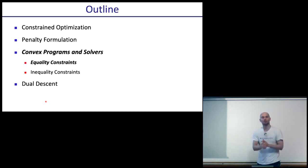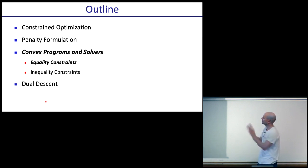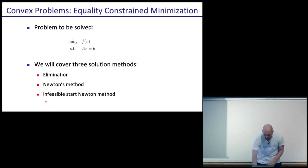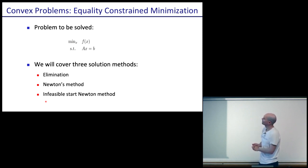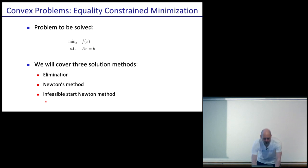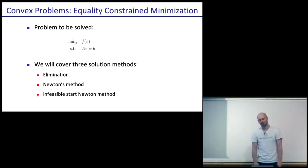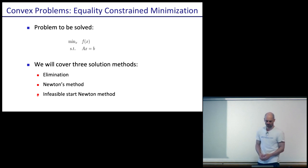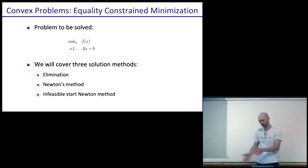Now we have to deal with equality constraints and inequality constraints. Let's first deal with equality constraints and ignore inequality constraints, then look at inequality constraints separately. The problem is: minimize over x, f of x, such that Ax = b. We'll see three different solution methods: elimination, Newton's method, and infeasible start Newton's method. Different situations may call for different methods.